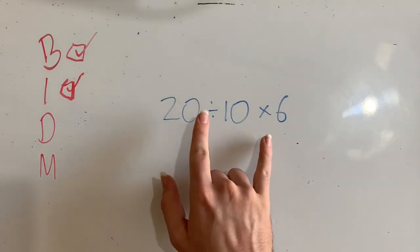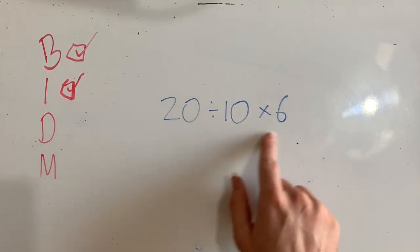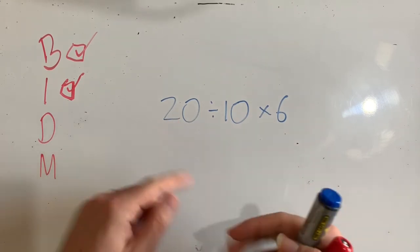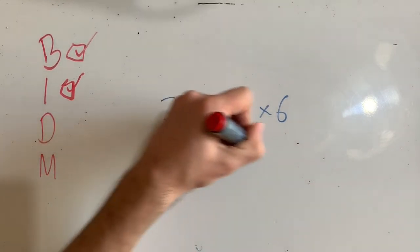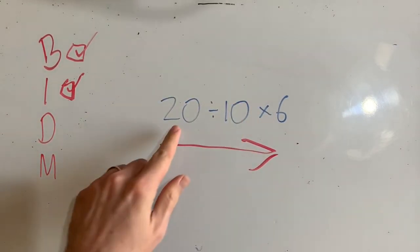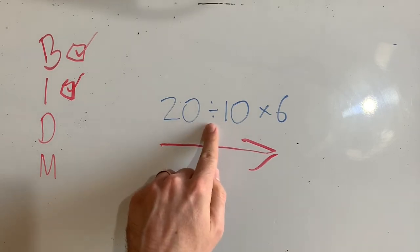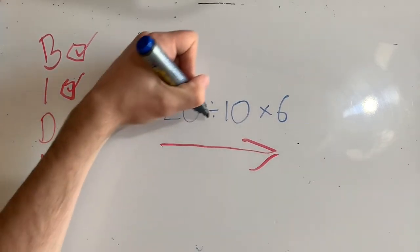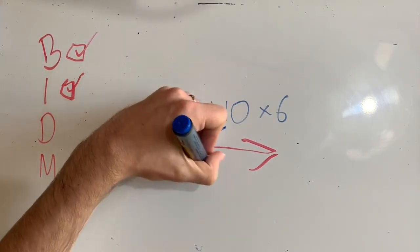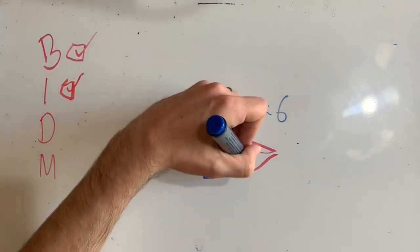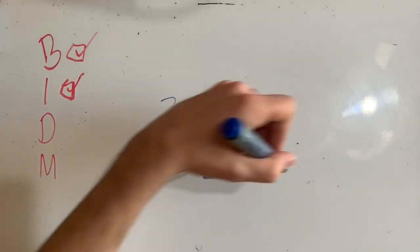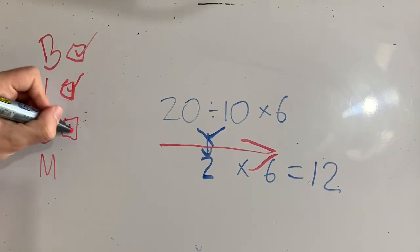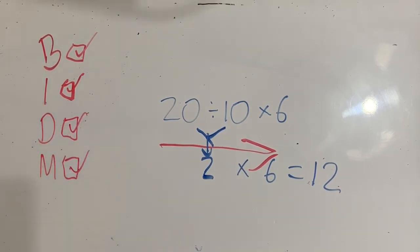We've got both of these signs. These are as important as each other. So when we have both of them in the same one, we work from left to right. So I want to do this one first. Okay, so I'm going to do that. I'm going to go down a line. So 20 divided by 10 becomes 2. And then I've still got to times that by 6, which equals 12. And so that is division and multiplication looked at.